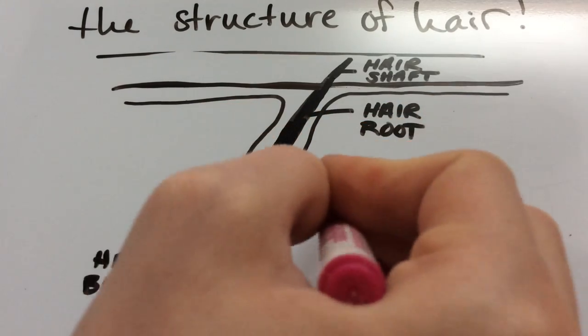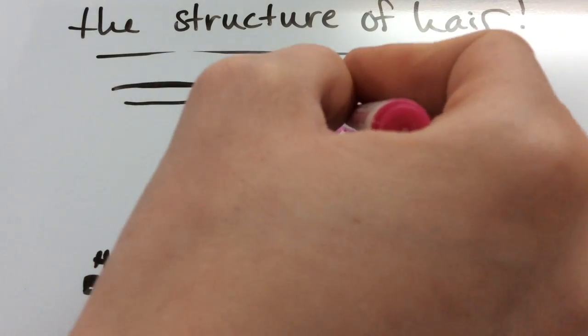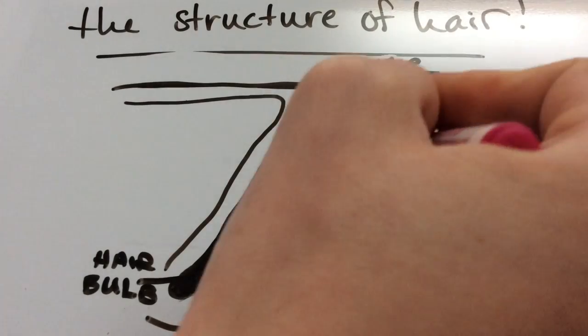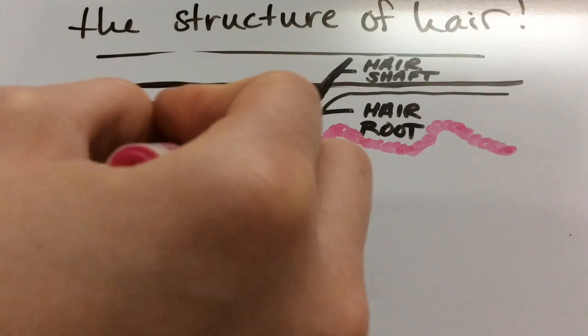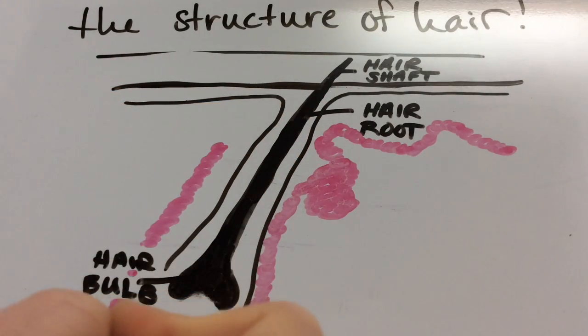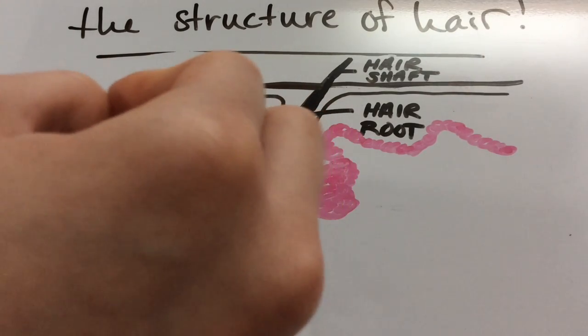The sebaceous gland is an oil gland in the skin connected to all your hair follicles. It secretes a fatty, oily substance called sebum that lubricates the skin. It's a really important part of the integumentary system.